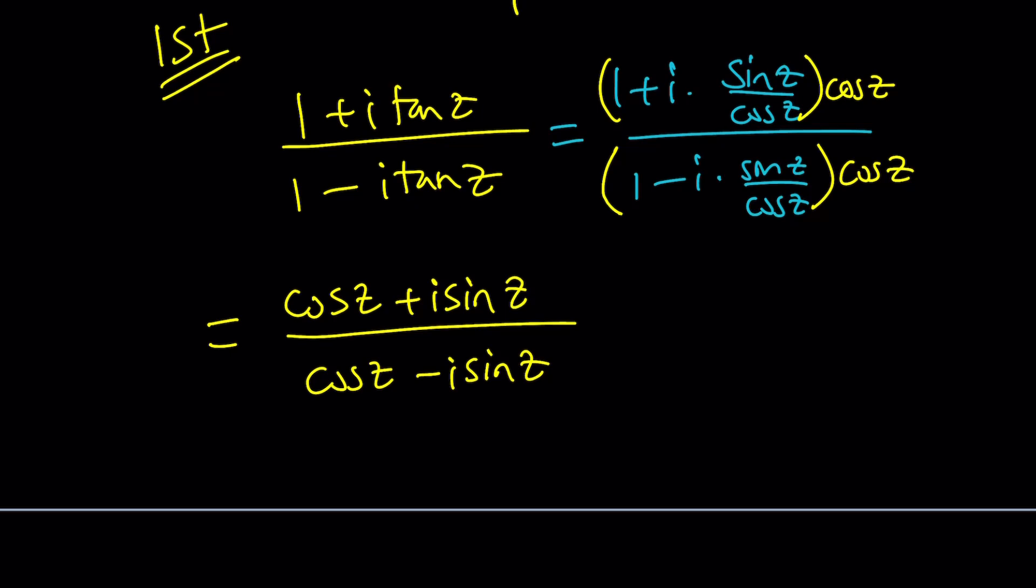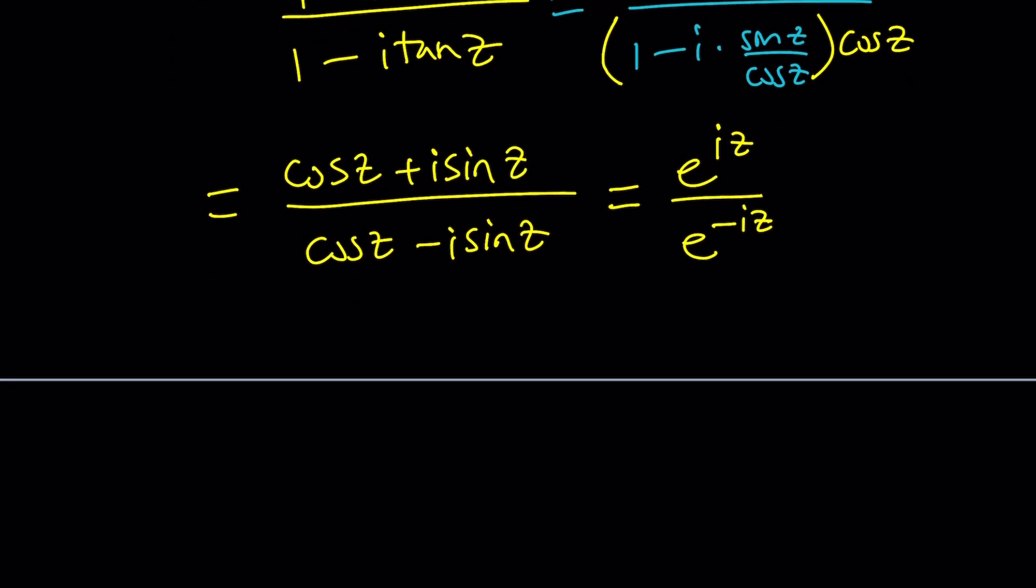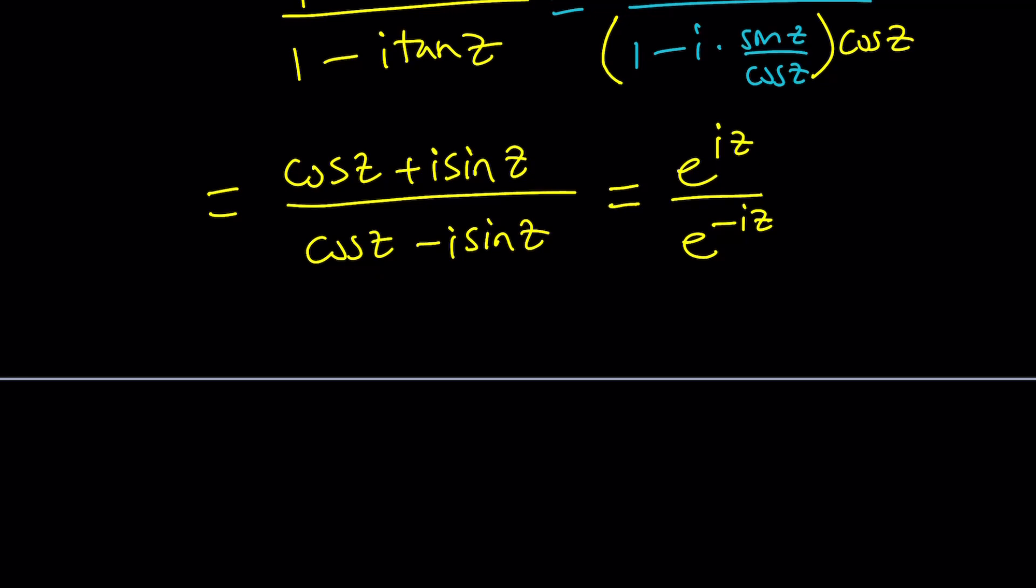Let's go ahead and write these numbers using Euler's formula, which is e to the iz, the complex exponential, divided by e to the power negative iz, which is the conjugate of e to the iz. Not only conjugate, they're also reciprocals, because the modulus is 1. Anyways, dividing exponentials is so easy. That's why this formula is beautiful, beyond belief. And you can just subtract the exponents, and you're going to get e to the power 2iz.